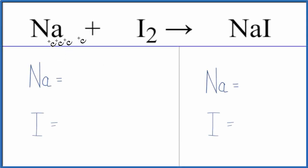To balance this equation, we have sodium plus iodine gas yields sodium iodide, Na plus I2.